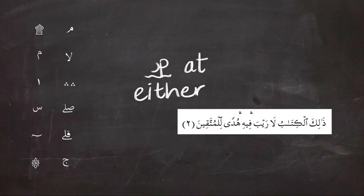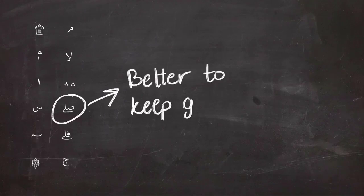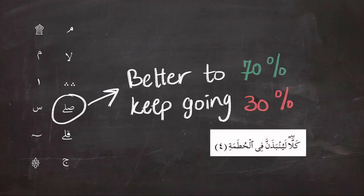Next is the symbol that looks like the word sill, and it means you better keep going. We could basically compare it to 70% go, 30% don't go, and it means that it is better to keep reading, like in the example.